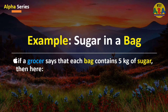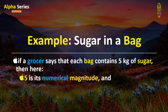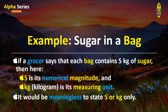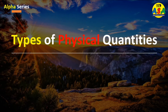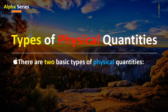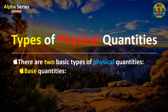Another example: sugar in a bag. If a grocer says that each bag contains five kilograms of sugar, then here five is its numerical magnitude and kg, that stands for kilogram, is its measuring unit. It would be meaningless to state five or kg only.